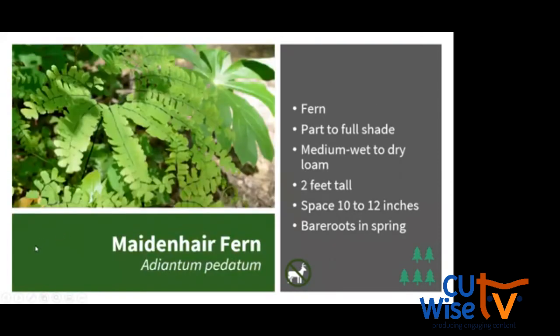For ferns, maidenhair fern is a great alternative to hostas. It's notable for its U-shape frond arrangement and wiry black stems. It grows up to 2 feet tall and spreads slowly through rhizomes. It does well in medium-wet soils but can also tolerate slightly drier conditions — contrary to what you might expect for fern habitat. Plant bare roots in spring, and it has been studied to be deer resistant.